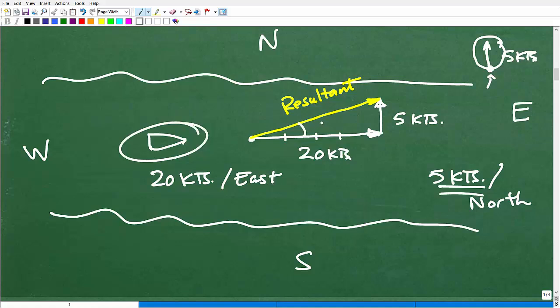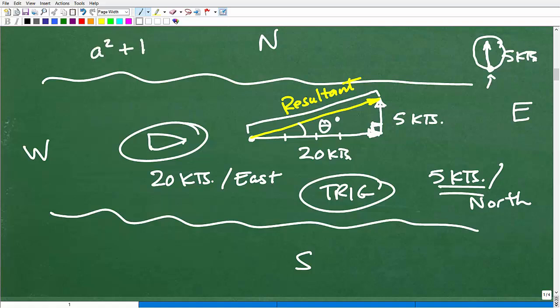So this angle right here, we'd have to figure that out. How could we figure that out? Well, we'd have to use some basic trigonometry. But it's not that difficult to get that actual angle. And then how fast is it going to be going? Well, we would have to determine the length of that.